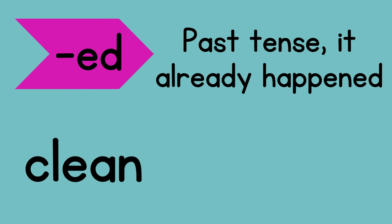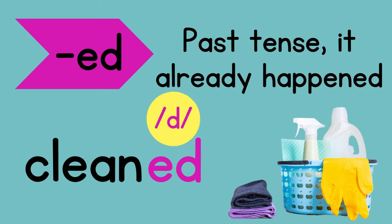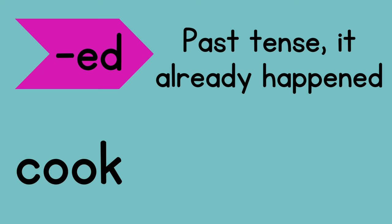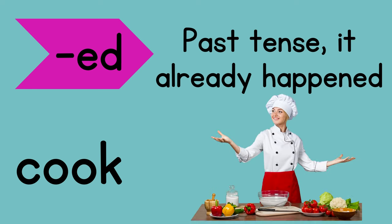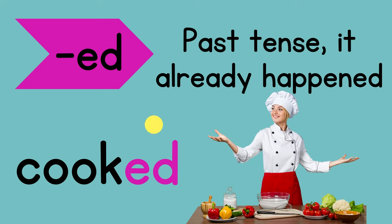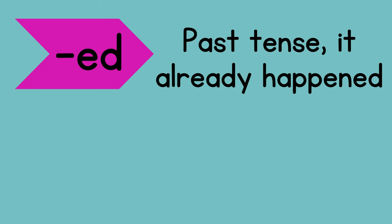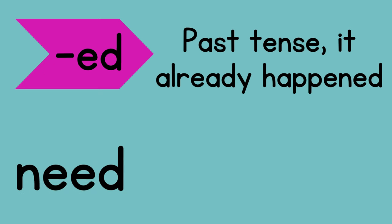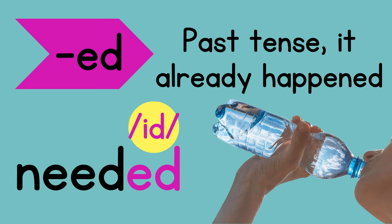Let's see some examples. Clean is our base word, and it can be a verb — you might clean your room. But maybe you already did it, it's past tense. Then you would add the suffix -ed to make it cleaned. That makes the -d sound. Now we have the word cook. You already did that, so the word would be cooked, with the -t sound. Lastly, we have need — if we add -ed, then we get needed, with the -id sound.